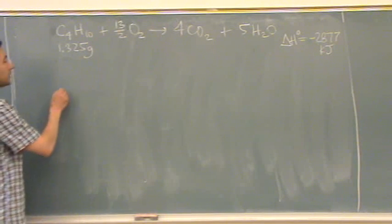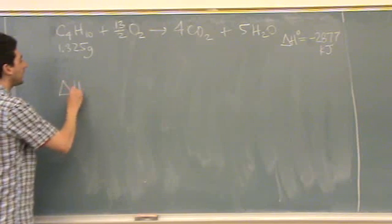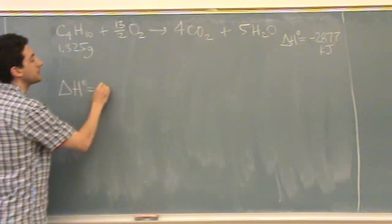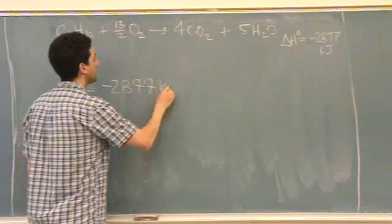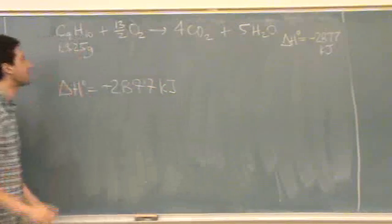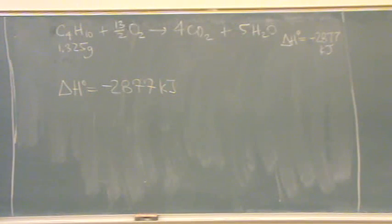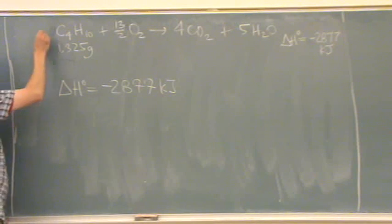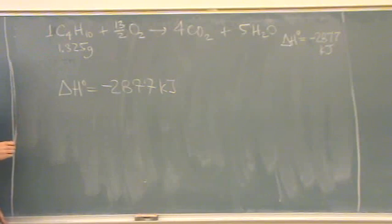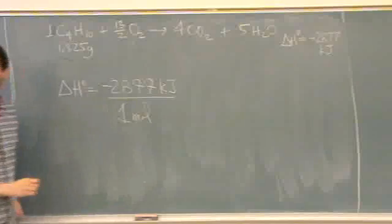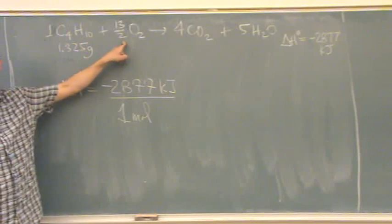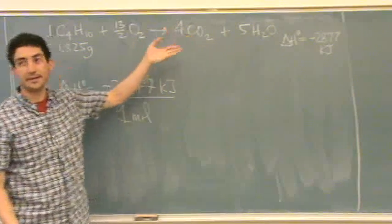So what you're going to do is you say delta H for this reaction is minus 2877 from the problem, kilojoules. The molecule of interest is this one. You look at the coefficient in front, I didn't write it but it has to be one. So you go per, just like we did on the previous problem, one mole. There's one here, if it was this one 13 halves, this one 4, etc.